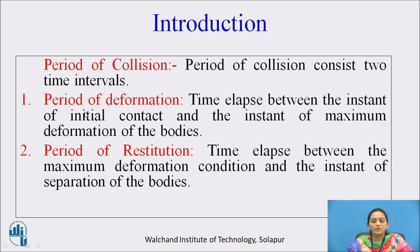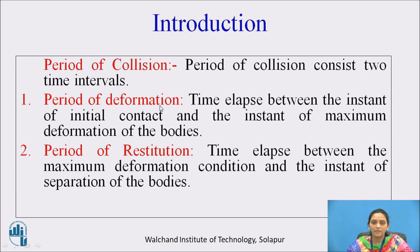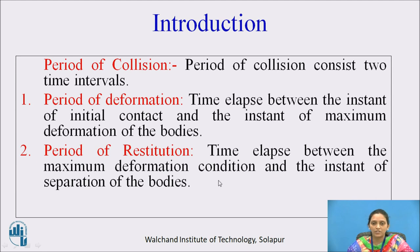Now we will see the period of collision. The period of collision is the total time between the instant of initial contact and the instant of separation of the bodies. It consists of two time intervals: the period of deformation and the period of restitution. The period of deformation is the time elapsed between the instant of initial contact and the instant of maximum deformation. The period of restitution is the time elapsed between the maximum deformation condition and the instant of separation.